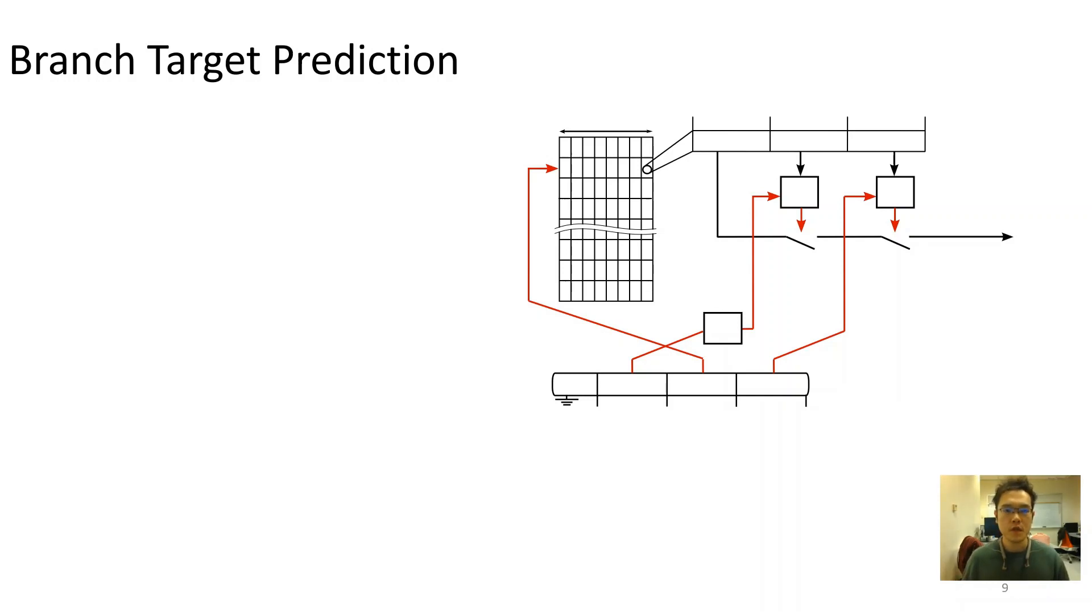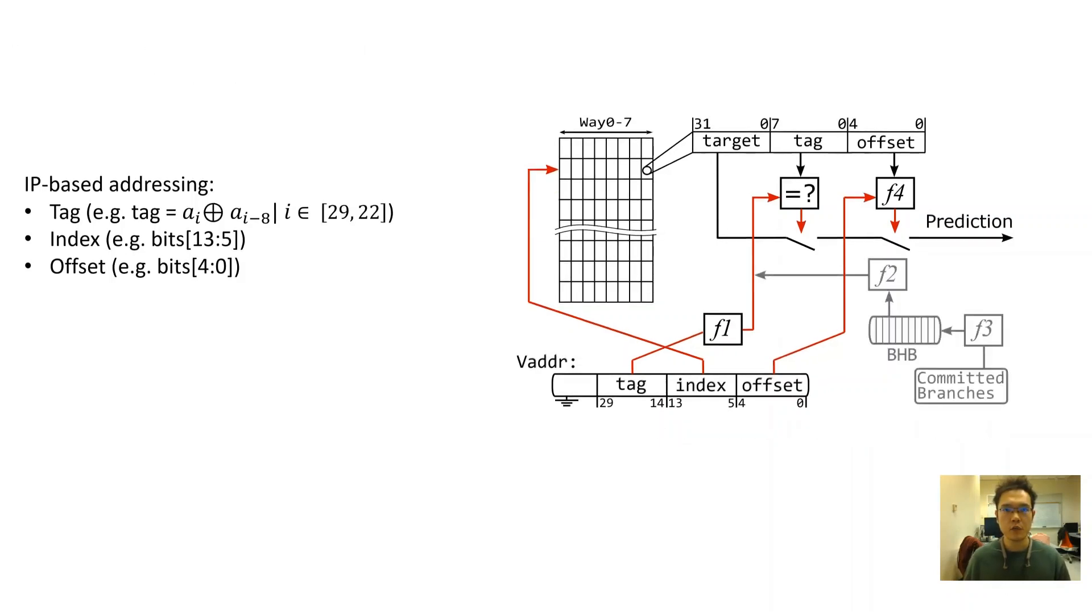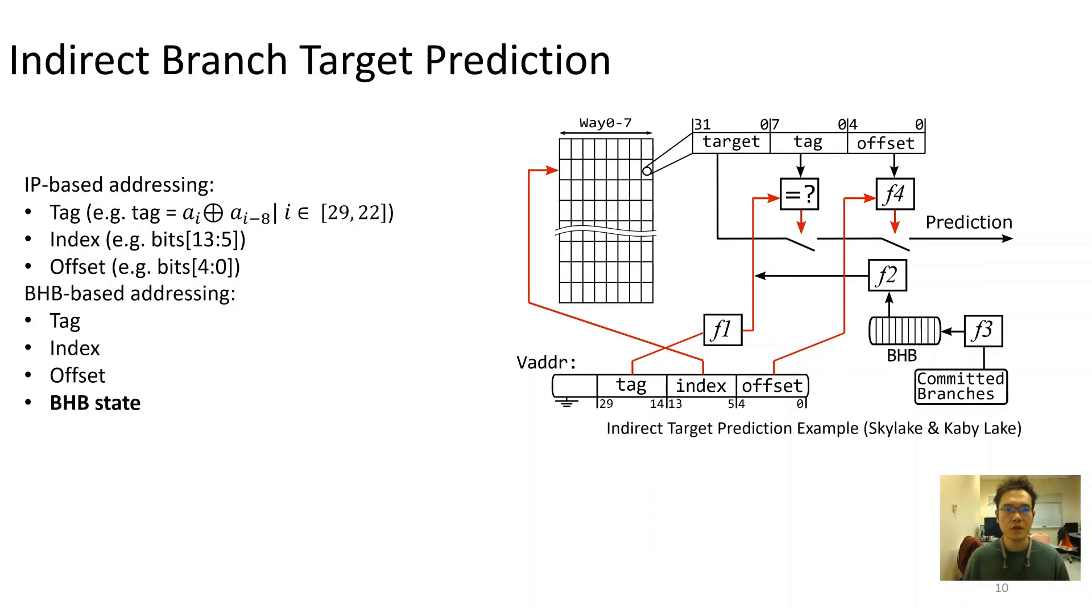First, by experimenting with the above test, we uncover detailed prediction schemes that BPUs generally use, including different tag folding schemes exactly matching base of indexes and offsets. For indirect branch prediction, additional information such as previous branch execution history are also adopted in the BHB-based addressing mode. When using this mode, branch history state, or BHB state, are also required to be the same for a collision.